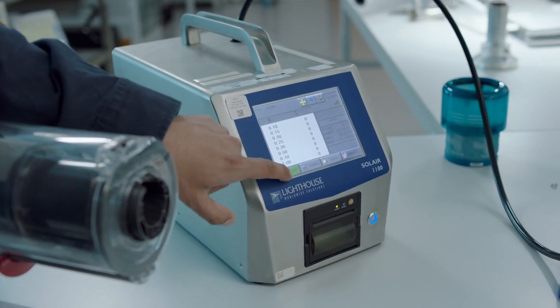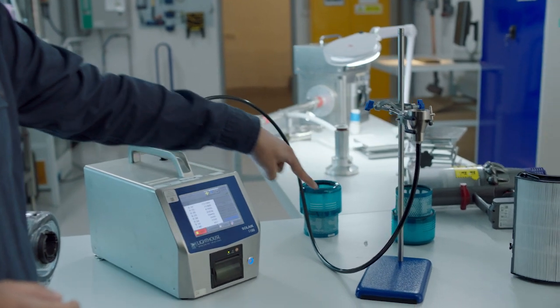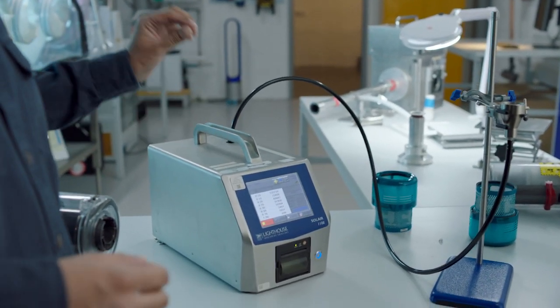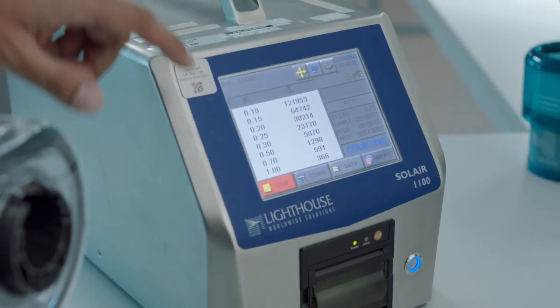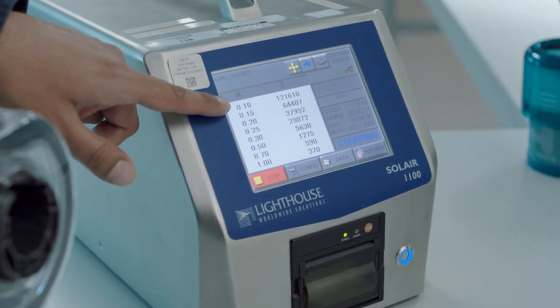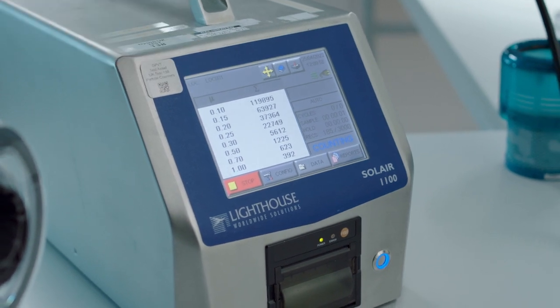This is a particle counter. It's drawing a really small amount of air through this tube and a really fine laser is counting the number of particles and grouping them into different sizes. We can see at the 0.1 micron size we're getting 120,000 particles being counted within the atmosphere.